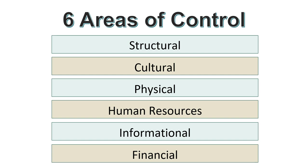There are six areas of control. With the financial area, we look at whether bills are being paid on time, how much money is owed by customers or to suppliers, and whether we have enough cash on hand for payroll obligations. The informational area covers production schedules, sales forecasts, competitive analysis, and public relations briefings. The physical area includes buildings, equipment, and tangible products.